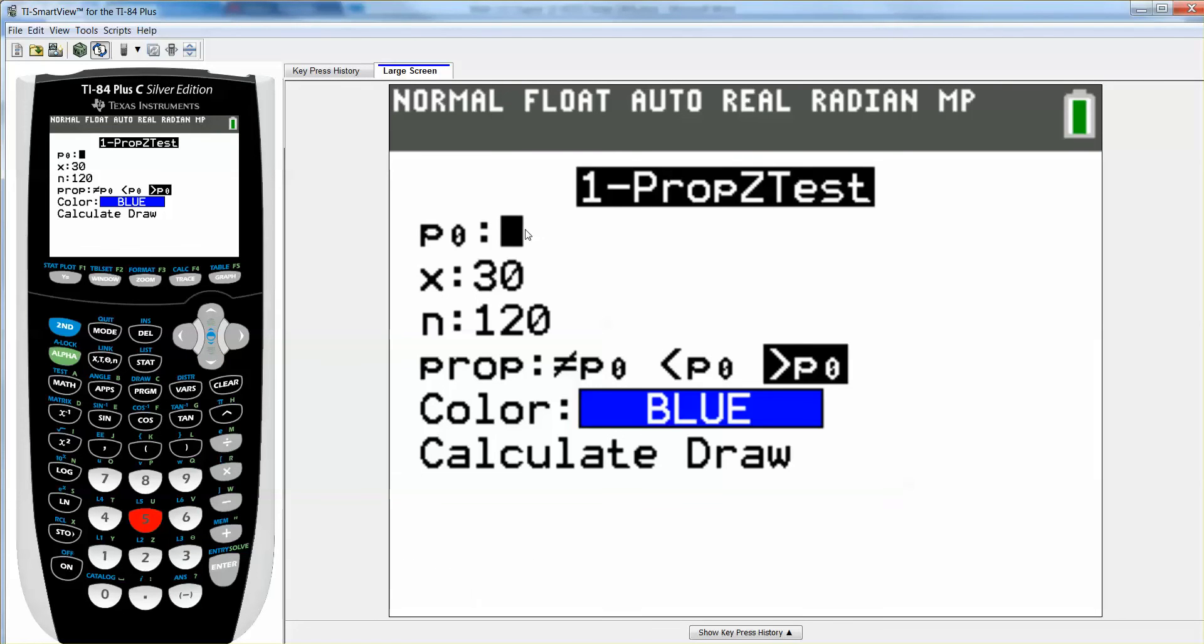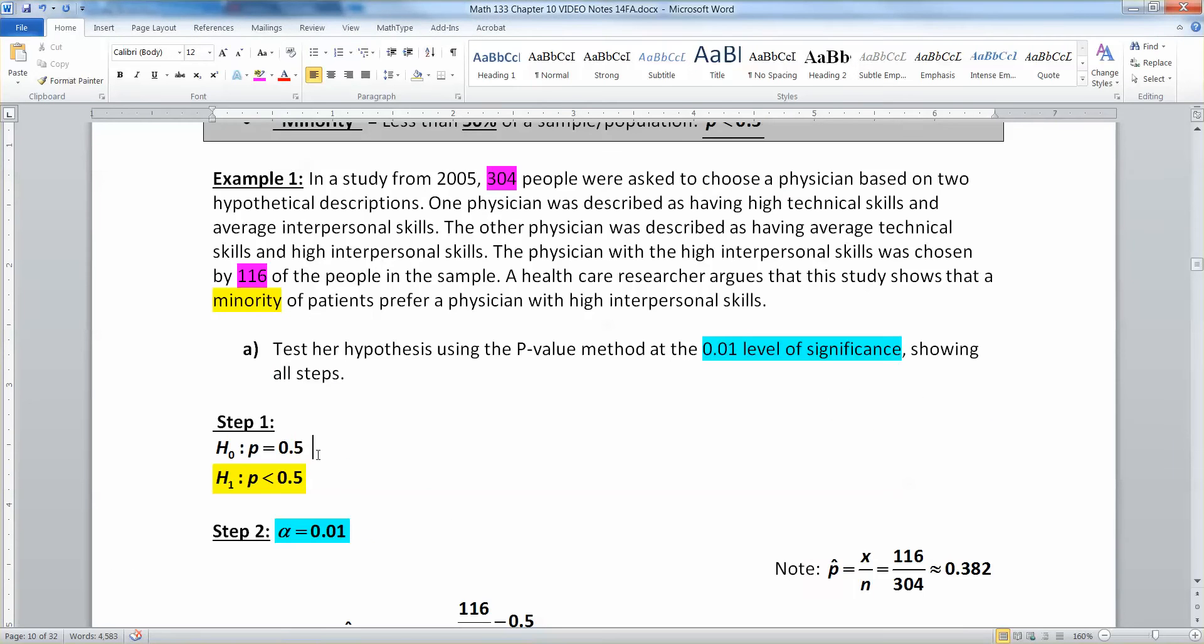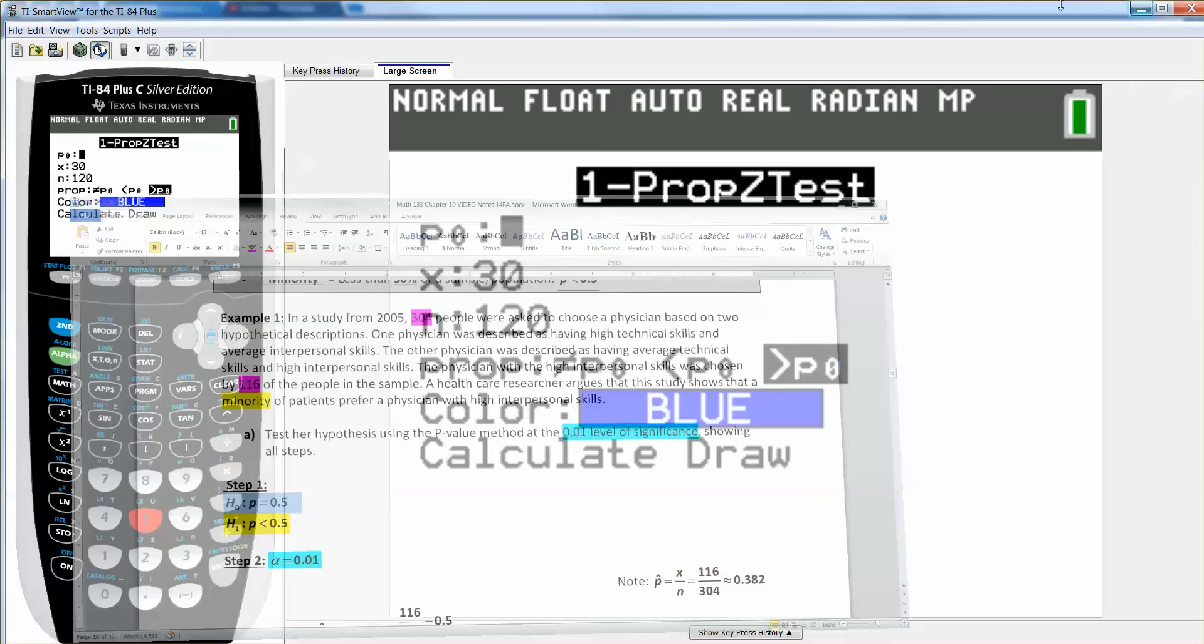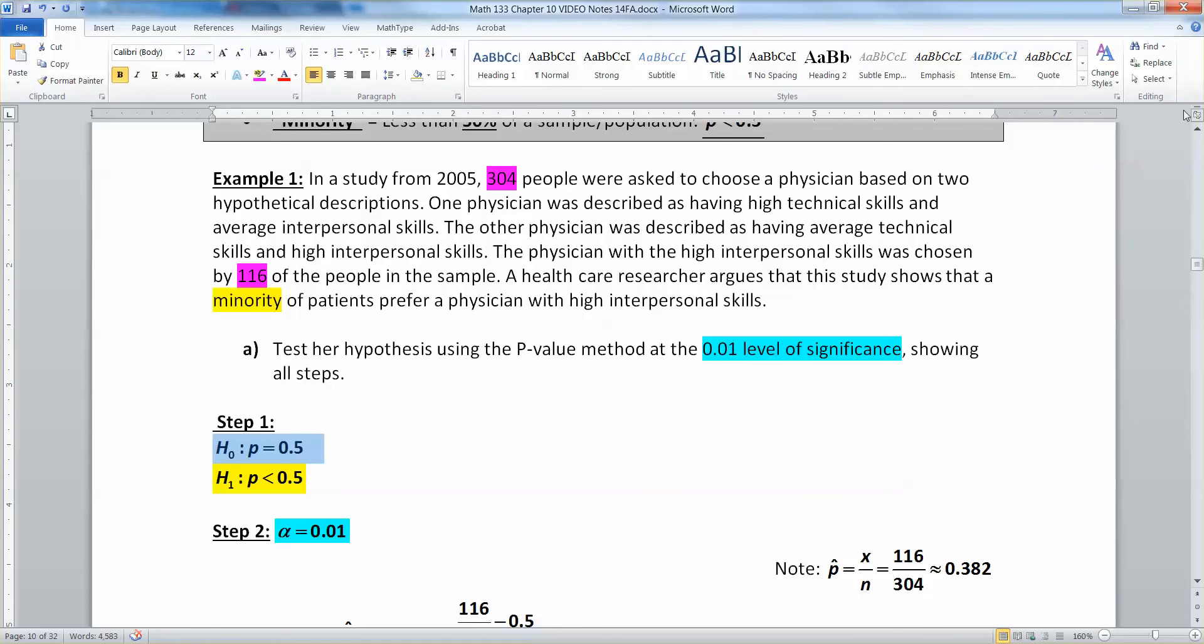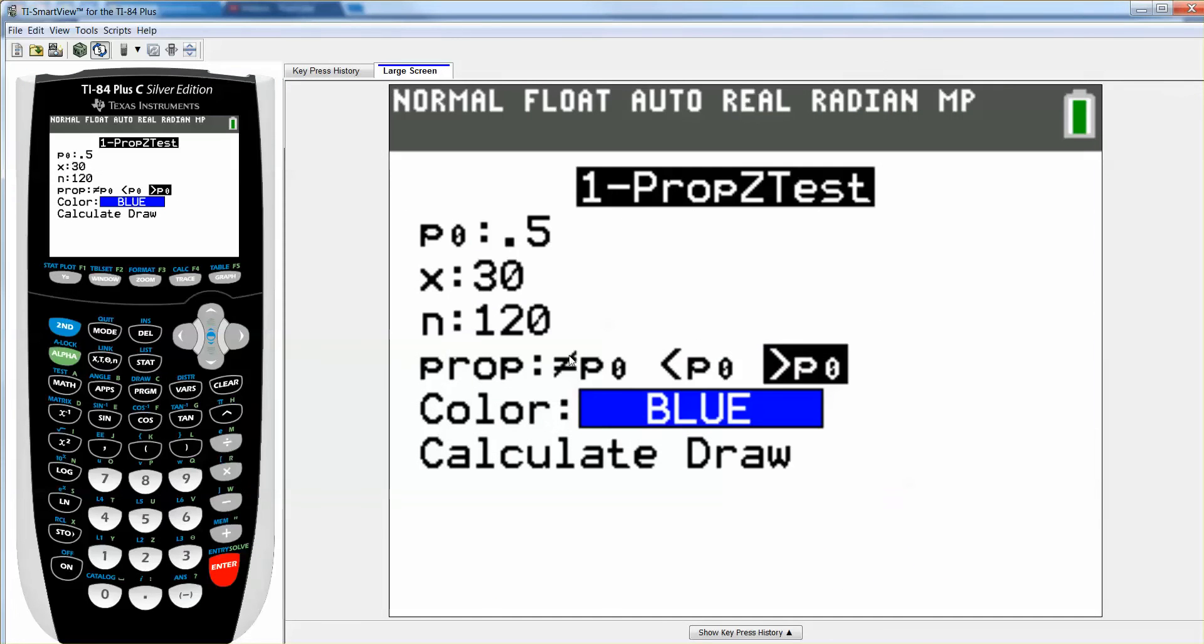So, there it is, right there. So, I'm going to grab that. 1 prop Z test, number 5. Then, I have to tell it my P0. 0 is my null hypothesis. So, if you look at your null hypothesis, you assumed 0.5. So, I take 0.5. X was the number of people that had what I wanted, which was 116. 116 people wanted the people with high interpersonal skills. 304 is your N.